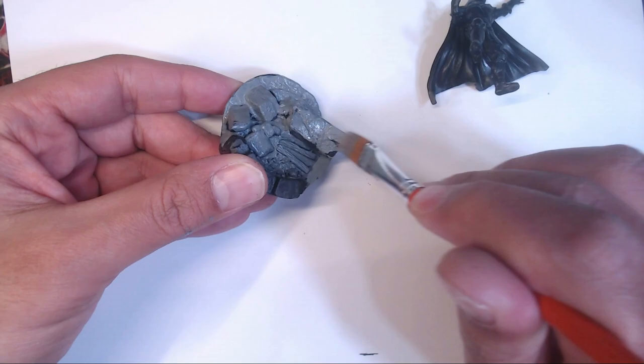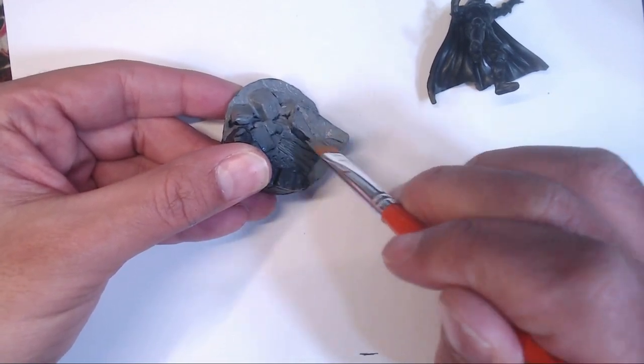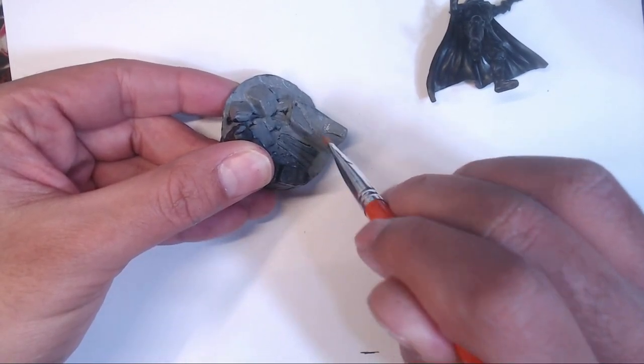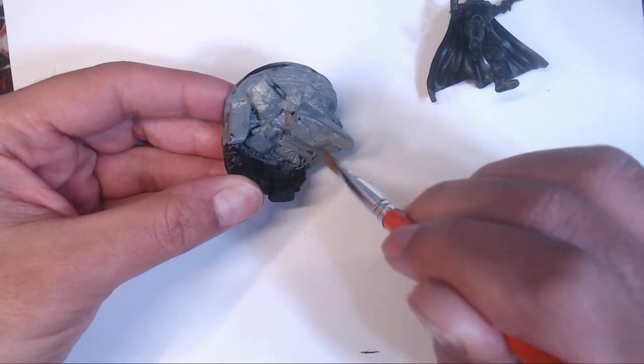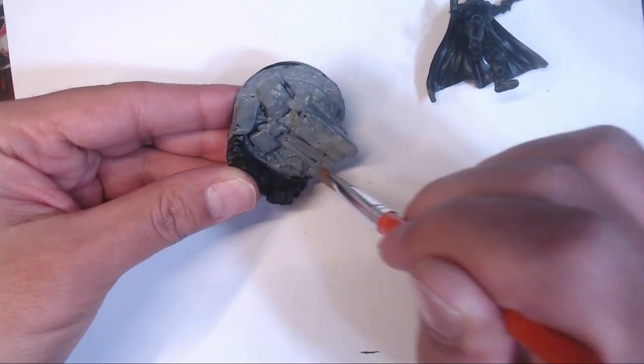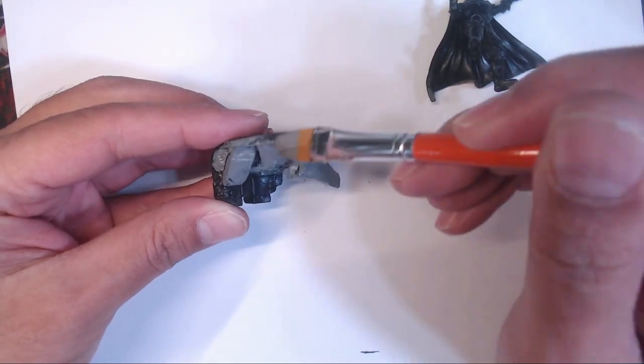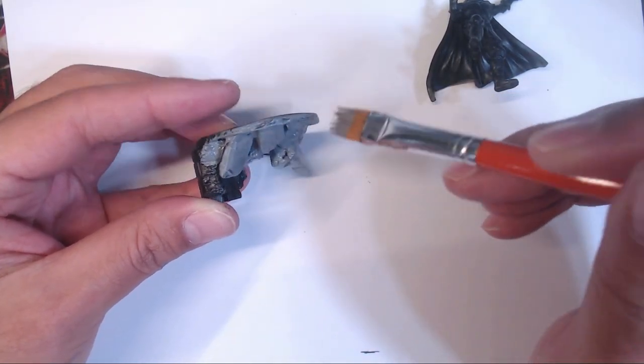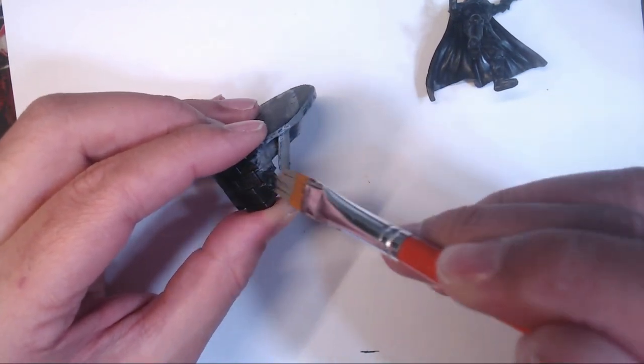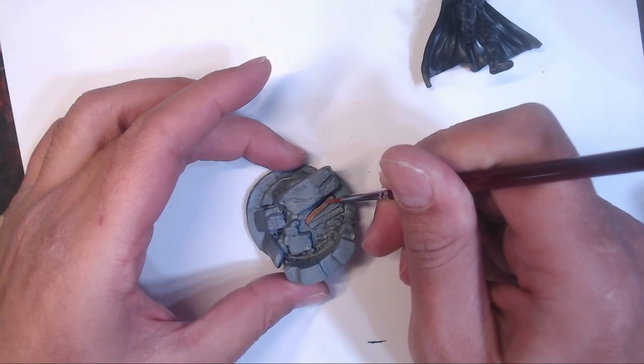Usually, when you put down a base coat, you want a fully opaque coverage, but I feel when painting stone, having variation of the color tones is key to making it really look like a rock. So, having a couple of thin spots here and there, where the black primer can be seen, will just save us a bit of time and sell the look a bit better.